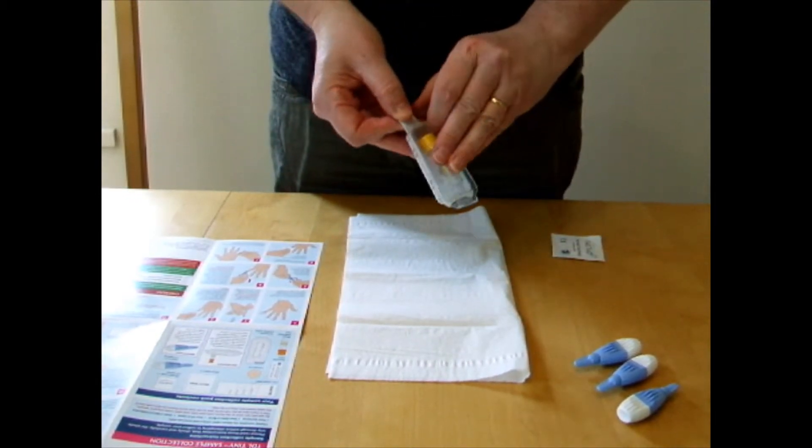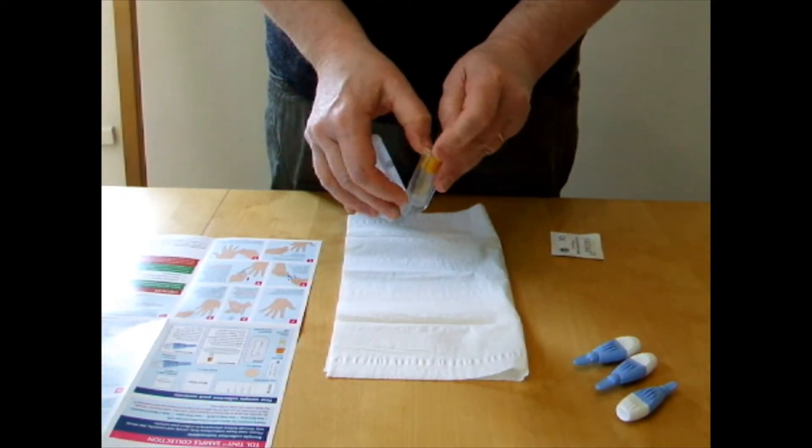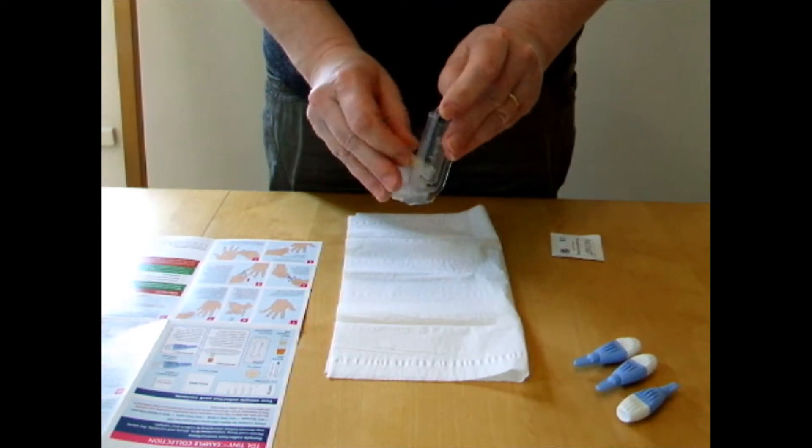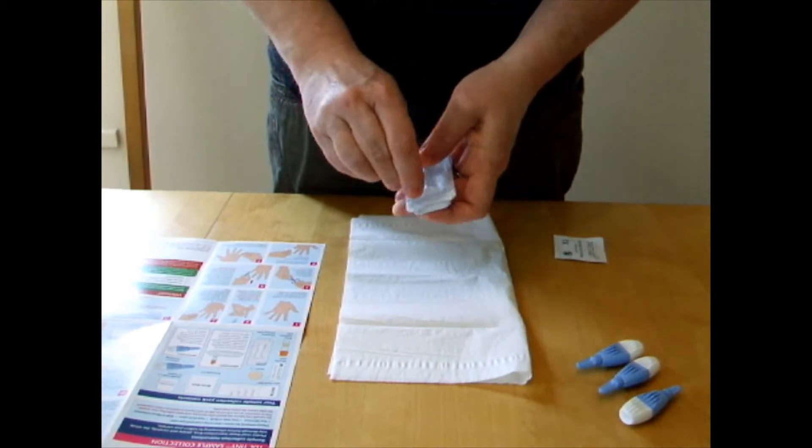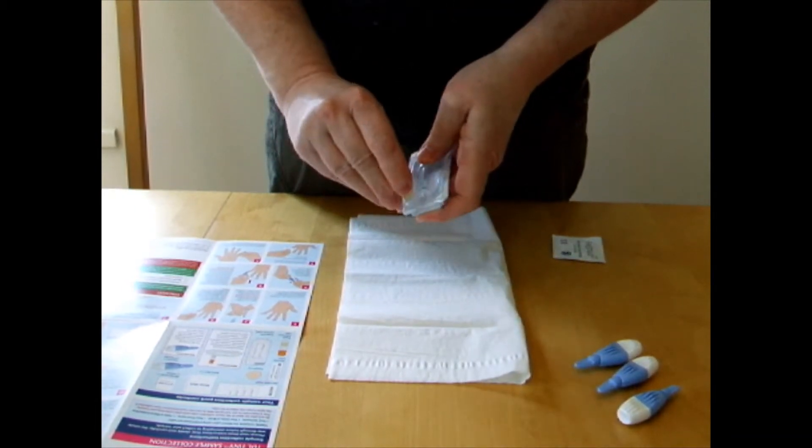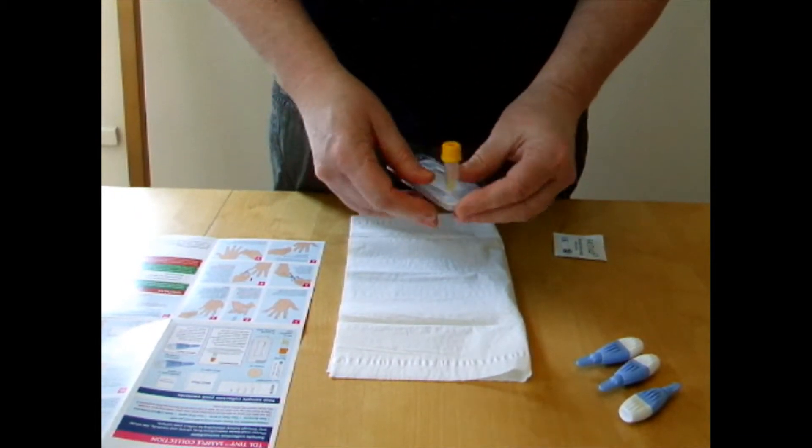When you've opened the pack, you'll find that you have a small tube and that's what you're going to be collecting your sample in. There's a little circle for you to sit it in on the end here.